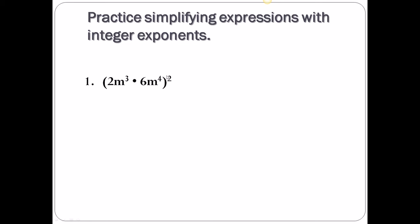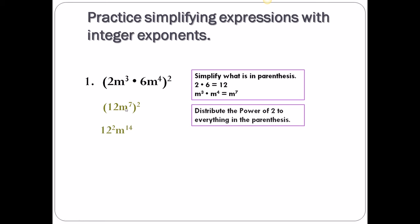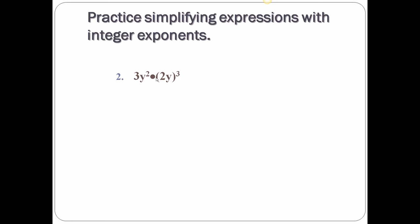Practice simplifying expressions with integer exponents. We have (2m³ × 6m⁴)². First, simplify what's in parentheses: multiply the numbers — 2 times 6 is 12. The m's have the same base, so add the exponents: m³ times m⁴ is m⁷. That gives us (12m⁷)². Now distribute the power of 2 to everything: 12 squared is 144, and m⁷ squared is m¹⁴. Final answer: 144m¹⁴.